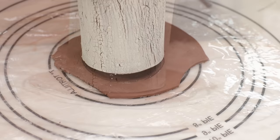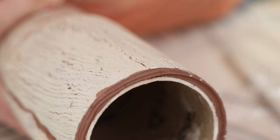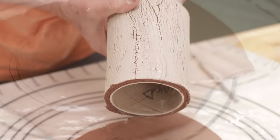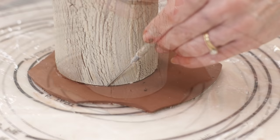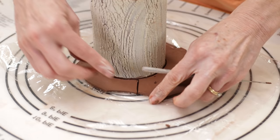I scored the edge of the circle and then scored the bottom of the cup. I slipped one edge and then attached them together.